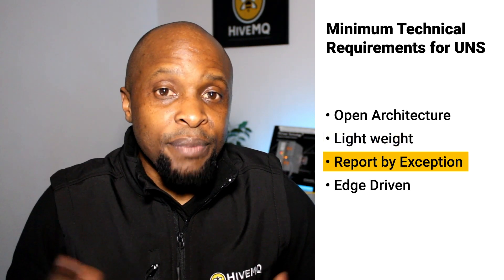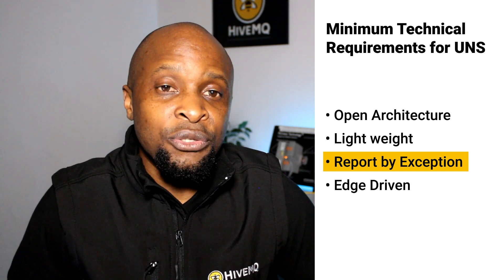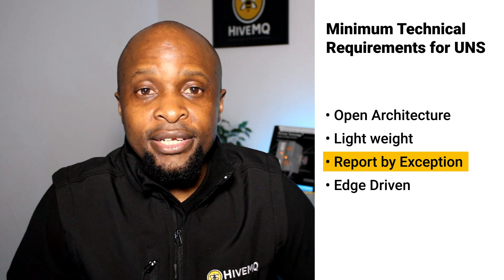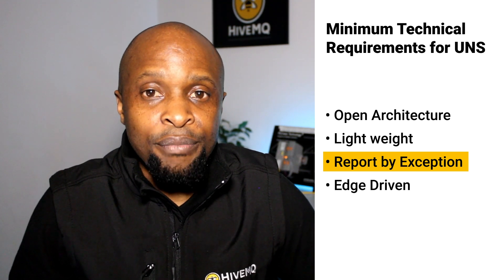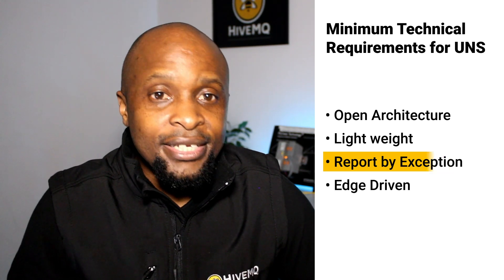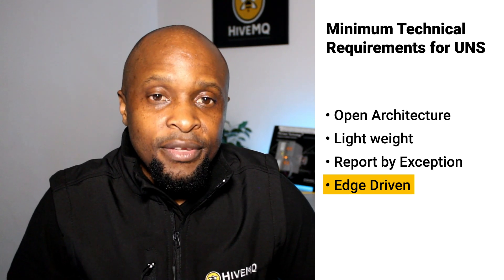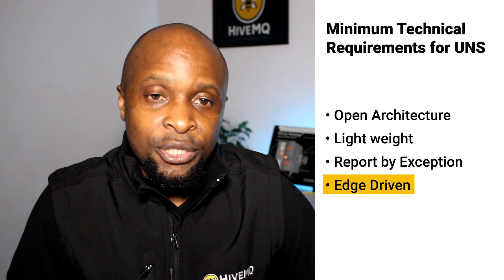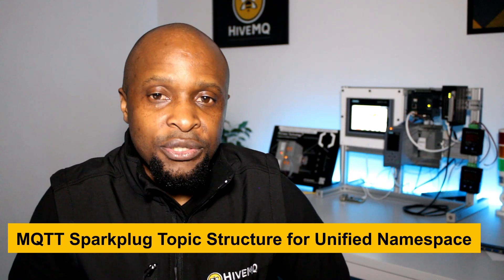MQTT Sparkplug B's report-by-exception rule ensures that data producers publish data to the UNS only when they detect changes in the monitored value. Reporting changes only enables the UNS to maintain the current state of its architectural components without continuously polling data sources to establish a current state. Data is pushed into the UNS by nodes at the edge of the network as a single source of truth, as opposed to collecting modeled machine data from different intermediate sources.